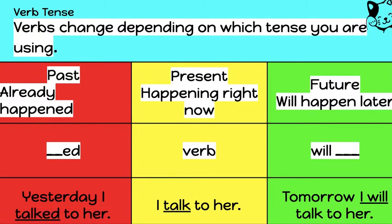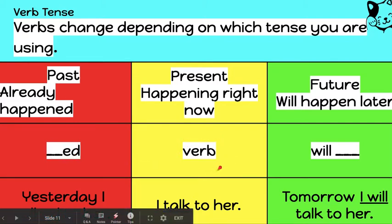So let's talk a little bit about verb tense. Verbs change depending on which tense you are using. Sometimes we speak in the past tense, sometimes in the present tense, and sometimes in the future tense. The past is something that already happened. The present is happening right now. And the future is something that will happen later. When writing verbs in the past, we add -ed. When using a verb in the present, we leave it as is. And when speaking in the future tense, we use the word will.